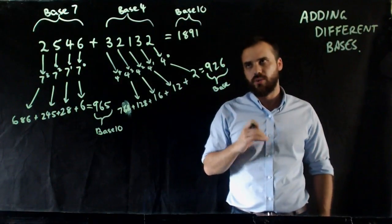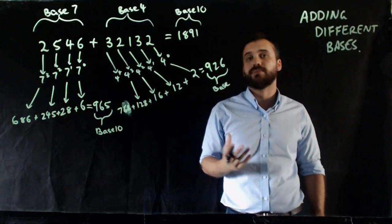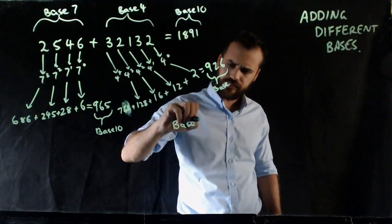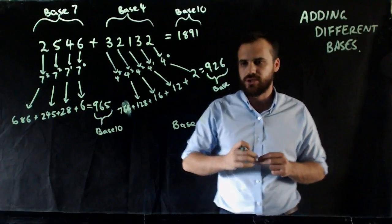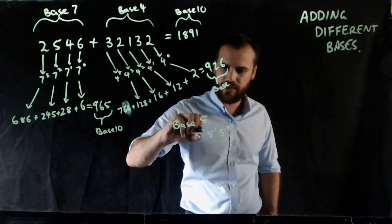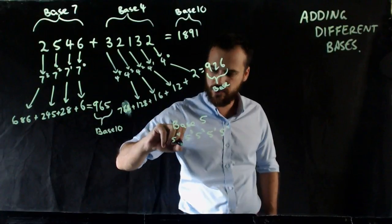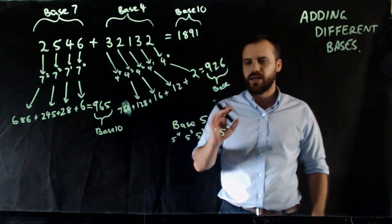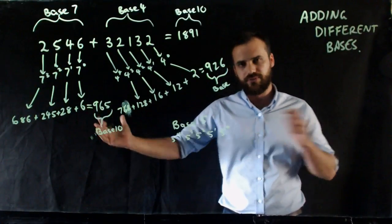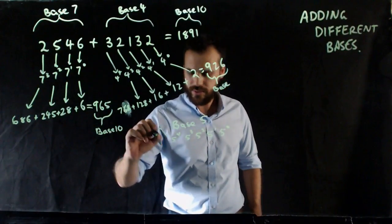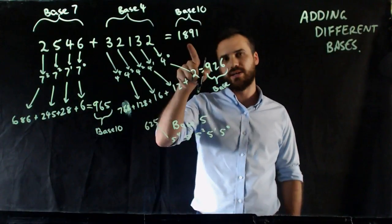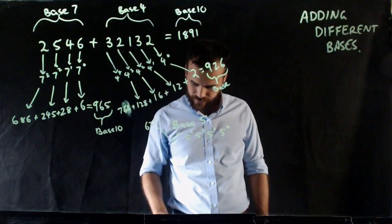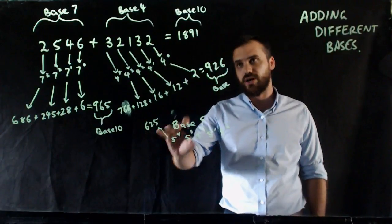Now, what if I complicated the issue? What if I said to you, actually, I didn't want it in base 10 — I wanted it in base 5. In that case, you're going to have to do everything in reverse. So you've got a 5 to the power of 0 column, a 5 to the power of 1, 5 to the power of 2, 5 to the power of 3, and a 5 to the power of 4 column. 5 to the power of 4 is 625 — and I have 3 of those in 1,891.